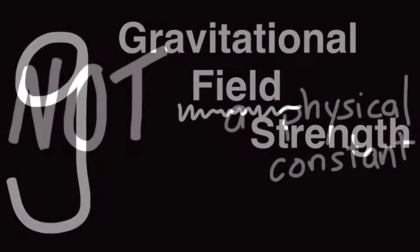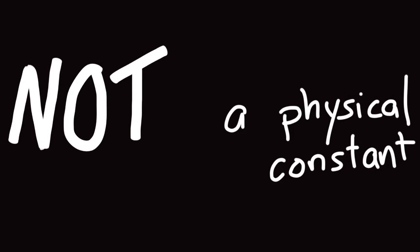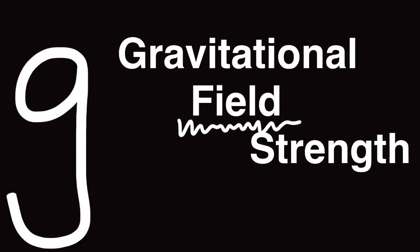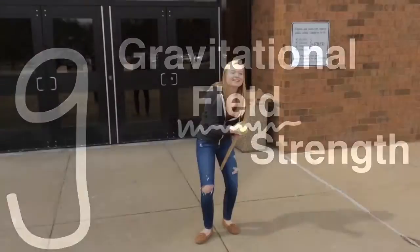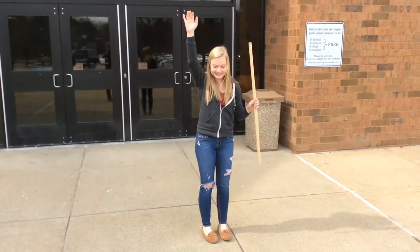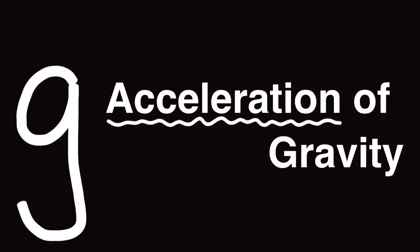Little g is not considered a physical constant because it changes depending on where you go. The gravitational field exists, and forces are applied to objects with mass in that field. It is because of that field force that objects accelerate when they're dropped or thrown, and we call this g the acceleration of gravity.